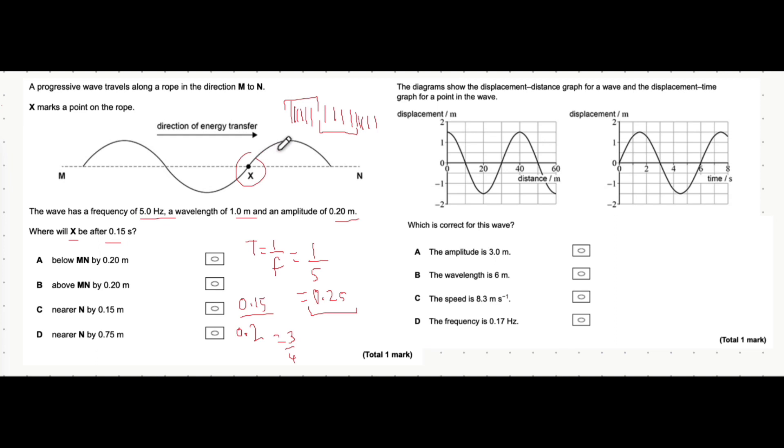Does it move 3 quarters of a wavelength forward or backwards? It's actually backwards because a particle moves opposite to the direction of energy transfer. Of course because it's a transverse wave, it moves perpendicular. In this case it moves perpendicular and downwards, not perpendicular and upwards, because then it'd be going in the direction of wave transfer.